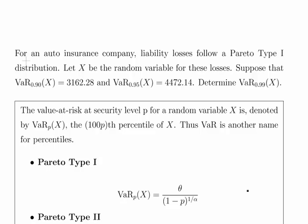For an auto insurance company, liability losses follow a Pareto Type 1 distribution. So X is our Pareto random variable for these losses, how much each incident costs. Suppose that the value at risk at 90%, the 90th percentile essentially, VaR_0.90 of X equals 3162.28. Similarly, 95% VaR_0.95 of X equals 4472.14.